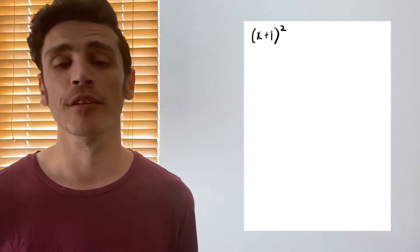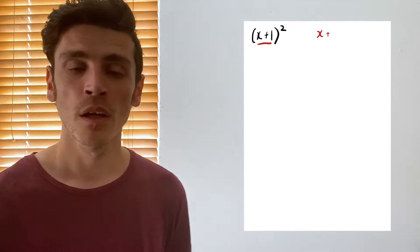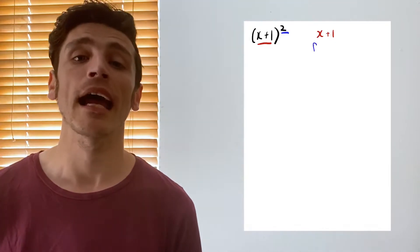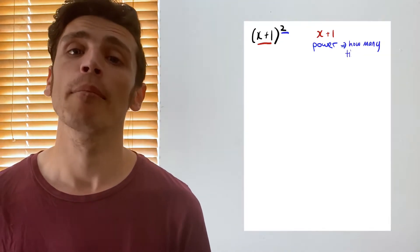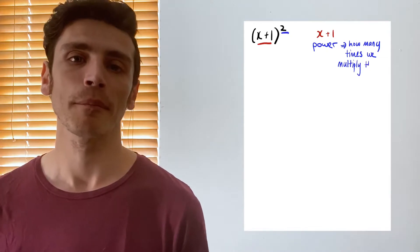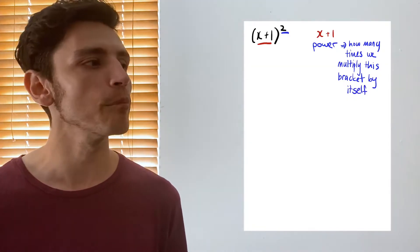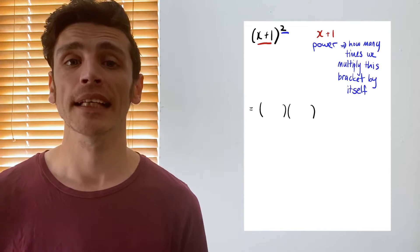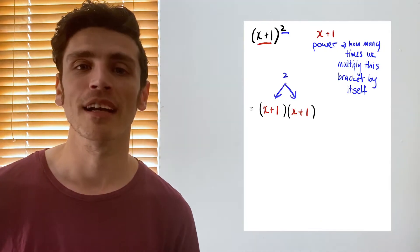So we're going to firstly understand what we're talking about when we've got the bracket x plus 1 to the power of 2. Inside the bracket are our components, which are x plus 1. The little number outside the bracket represents the power, which in this case is power of 2 — meaning we're taking our bracket and multiplying it by itself. So if we had 6 to the power of 2 that would be 6 multiplied by 6, and 6 to the power of 3 would be 6 multiplied by 6 multiplied by 6. In this case, power of 2 means we can rewrite it as the bracket of x plus 1 multiplied by another bracket of x plus 1.